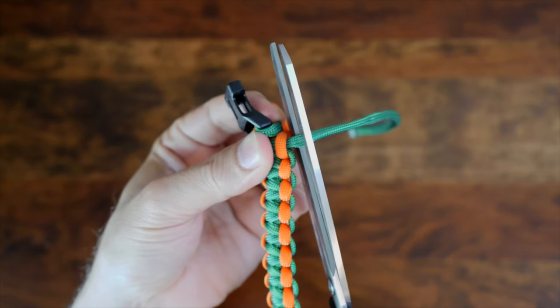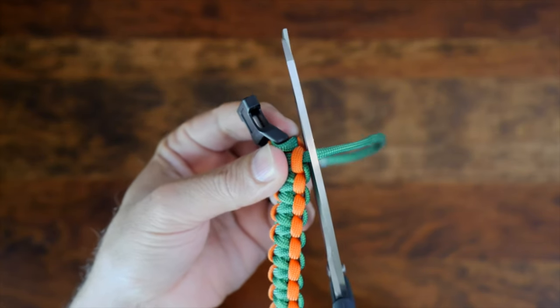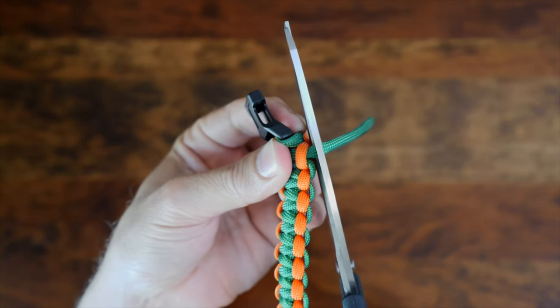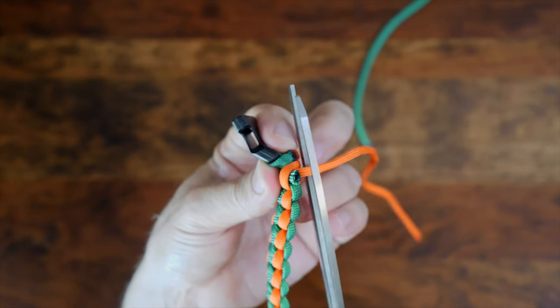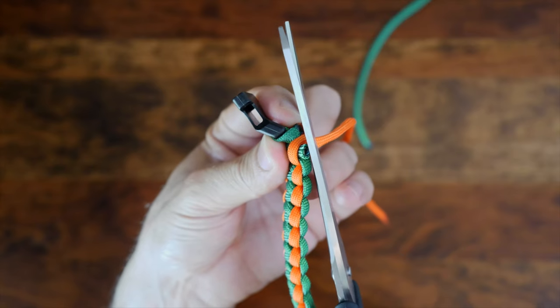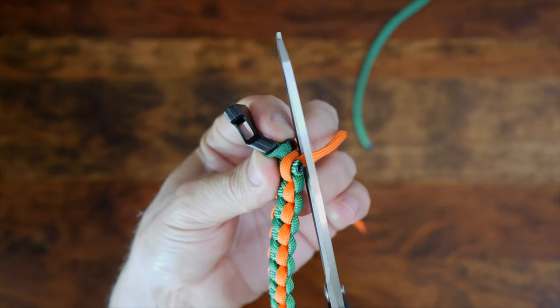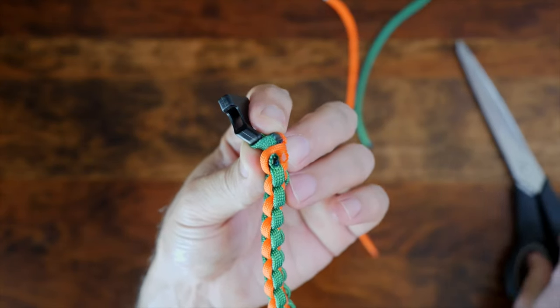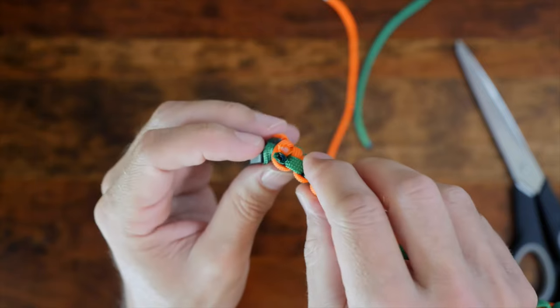To trim the ends, I'm going to use my scissors and cut the paracord a few millimeters away from the bracelet. I want to ensure that there's enough cordage to melt easily without risking burning the back of my bracelet. Also, I want enough melted paracord to fuse together with both strands to help hold it in place.